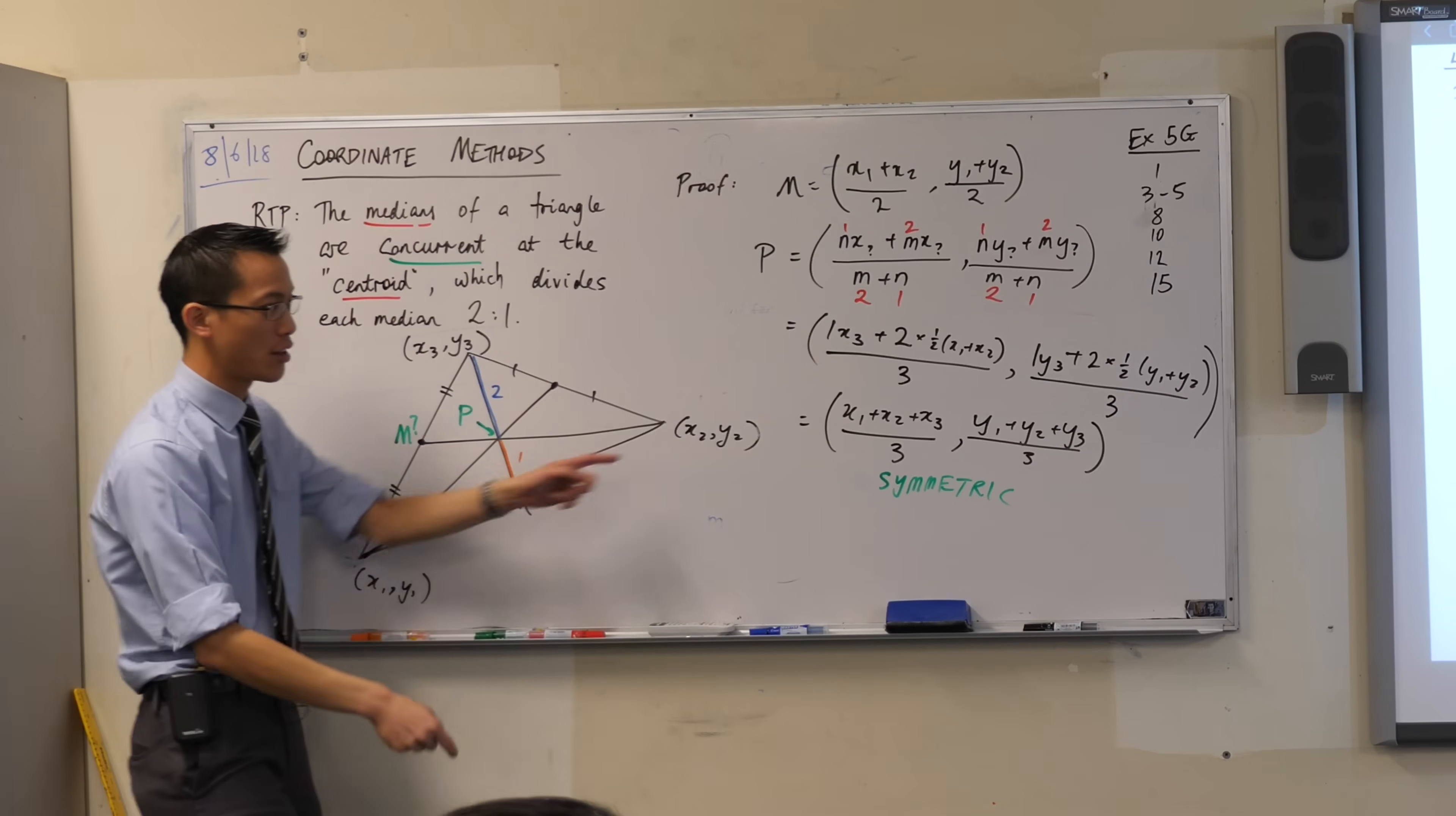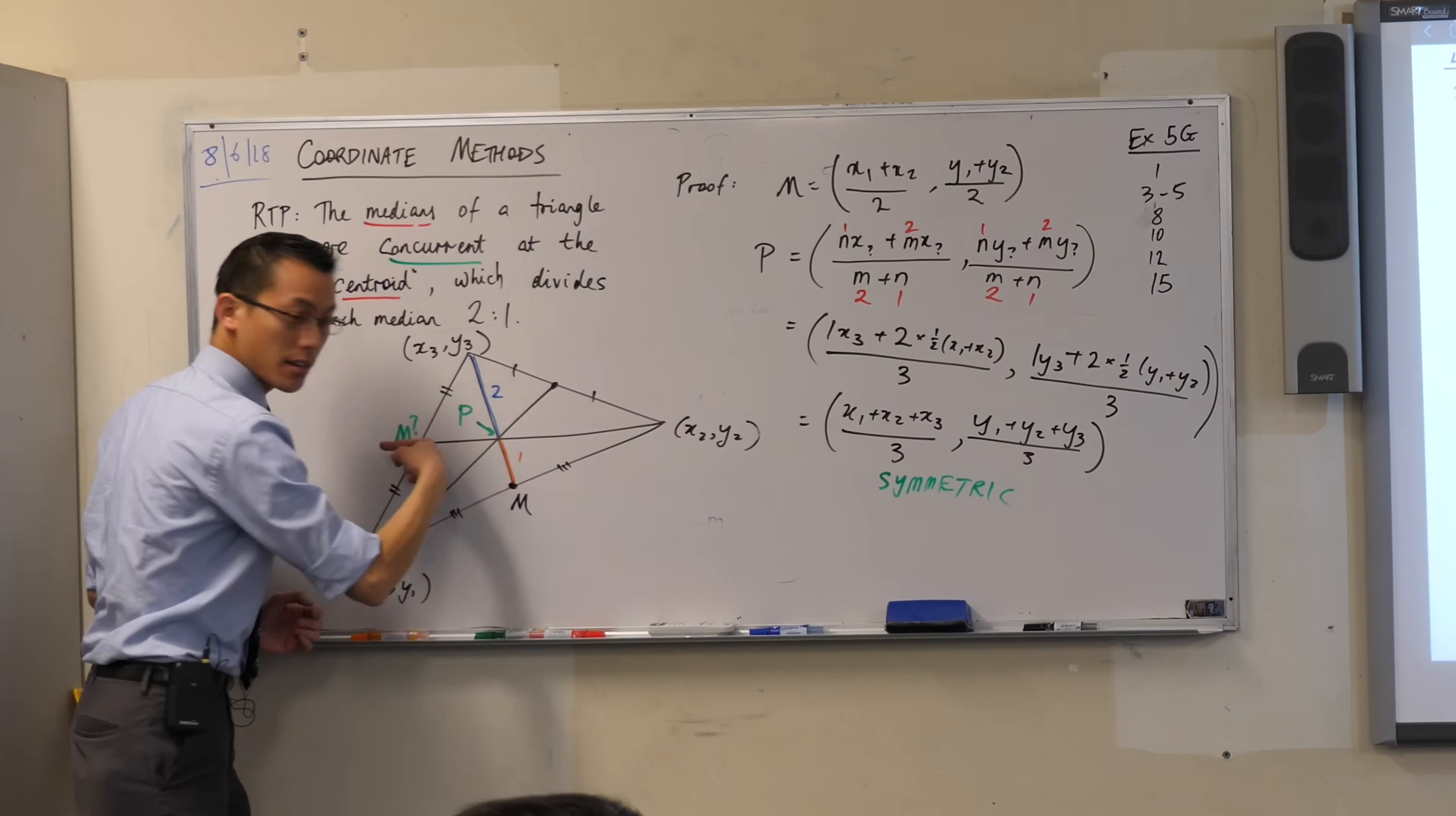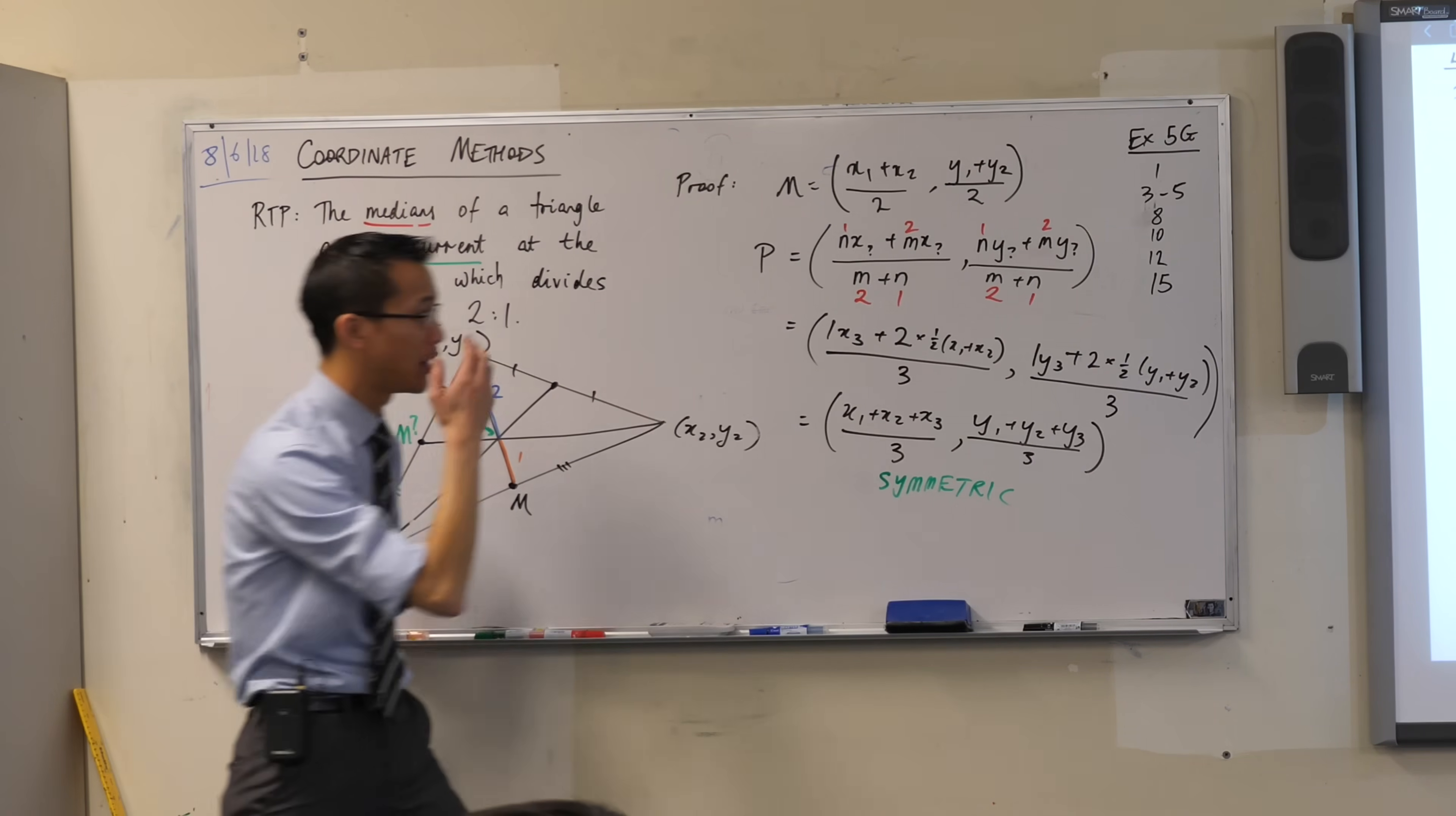Okay, so I haven't actually established just by doing 2 to 1 that that's going to be the centroid. But then, when I look at the result that I get after doing it 2 to 1, I find that this thing will be the same if I went from that side or from that side. They're all going to give me the same point, and that means they are all concurrent. So, I've used this as my sort of, like, stepping stone, right? And then I've proved the rest of it, if that makes sense. Okay? Good question.